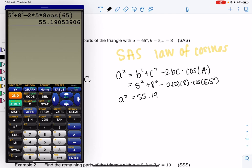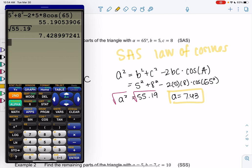And I get a² is 55.19. And so we'll go ahead and square root that to find a. So square root of 55.19, and I get a is about 7.43.